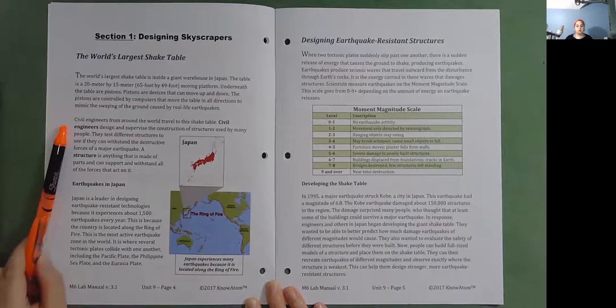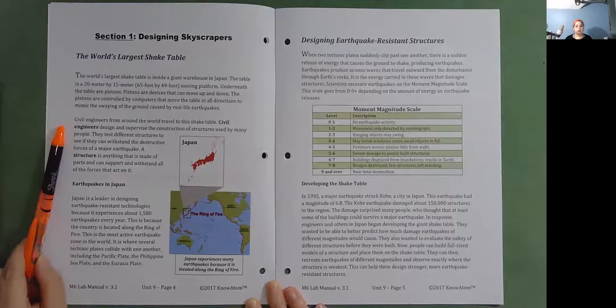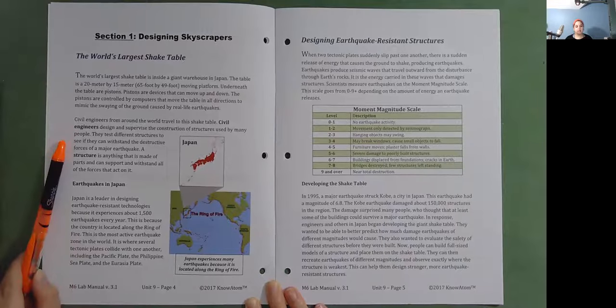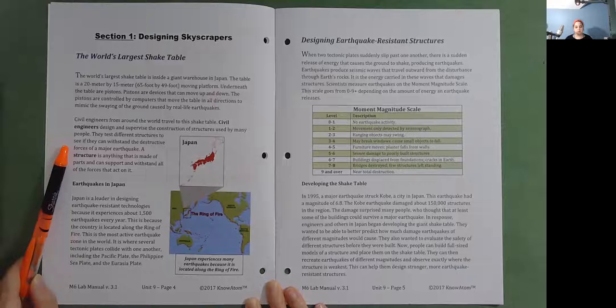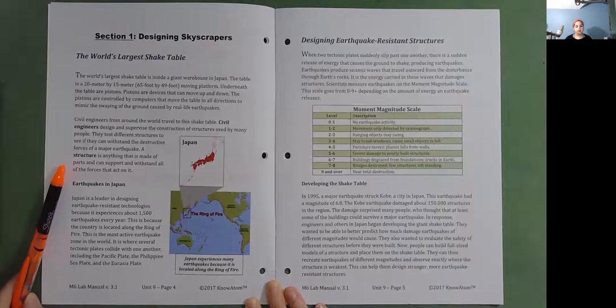Civil engineers from around the world travel to this shake table. Civil engineers design and supervise the construction of structures used by many people. They test different structures to see if they can withstand the destructive forces of a major earthquake. A structure is anything that is made of parts and can support and withstand all of the forces that act on it.